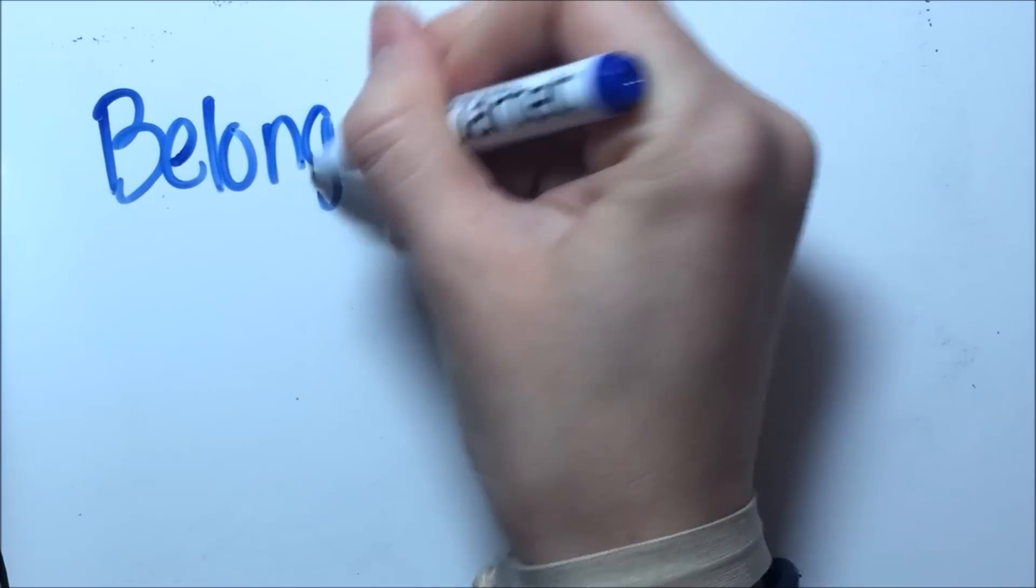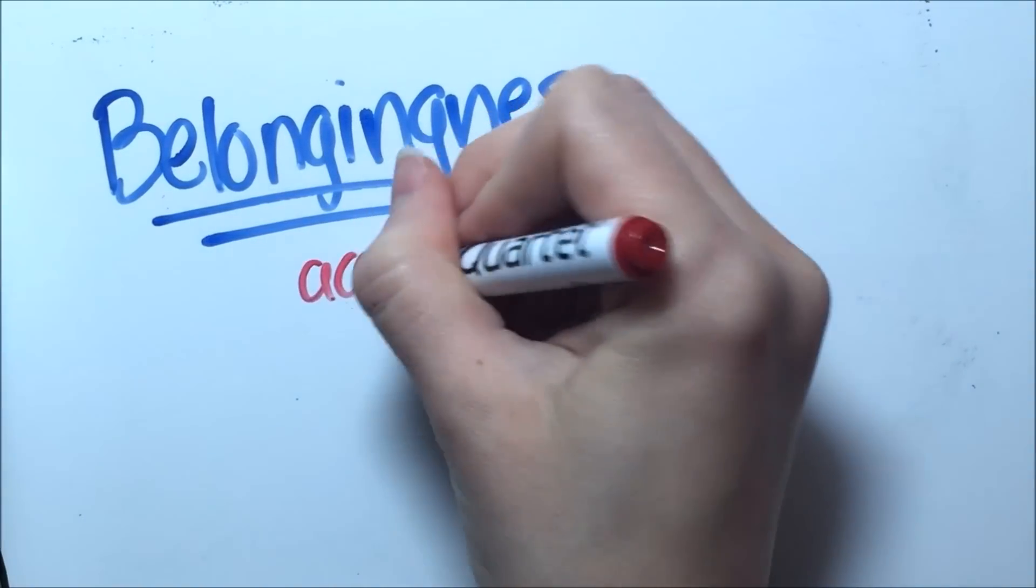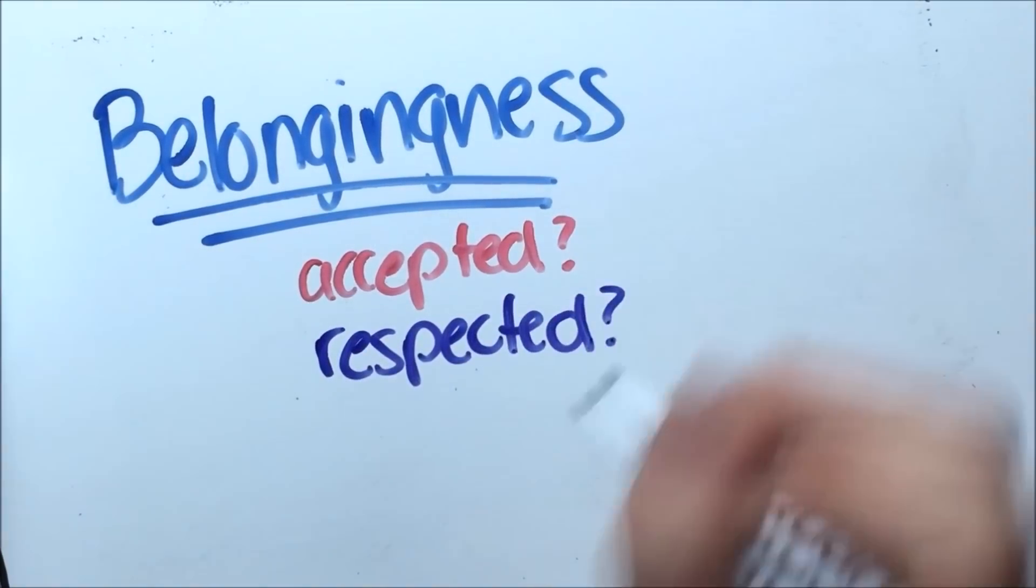So what is belonging? Belonging is the extent to which an individual feels accepted or respected in their school. It involves the student's perception of the school climate and how well they think they fit into what they see.